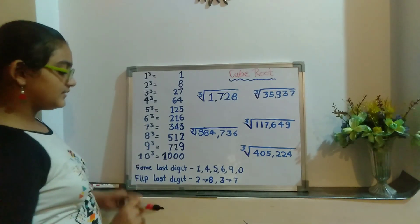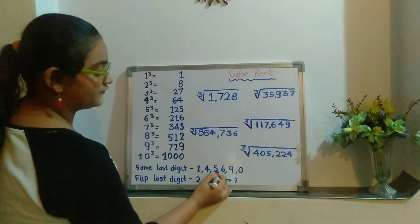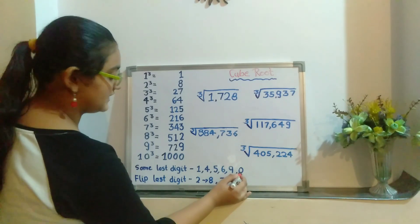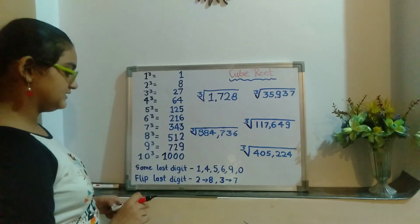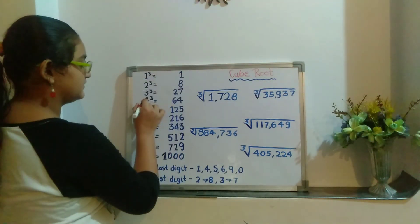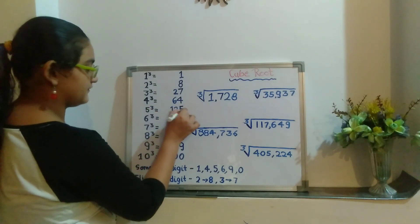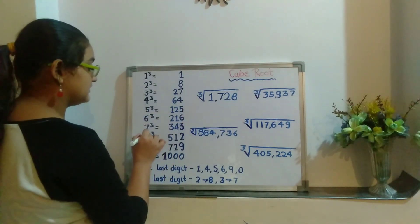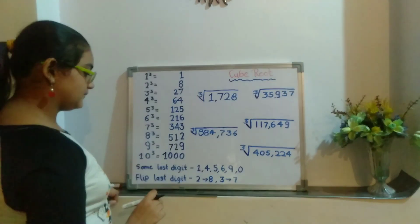Here you can observe that 1, 4, 5, 6, 9, and 0 are having the same last digit in their cubes. So 1 is having 1, 4 is having 4, 5 is having 5, 6 is having 6, 9 is having 9, and 0 is having 0.